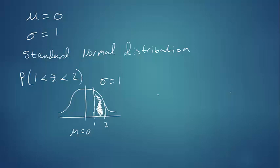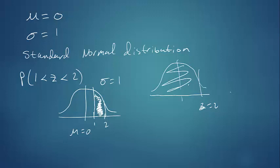So if we were to draw that, when we have z equal to 2, this whole area here is 0.9772.